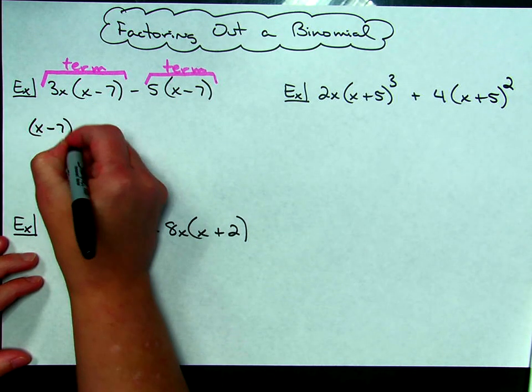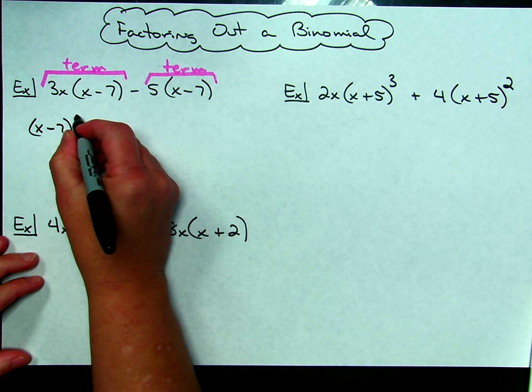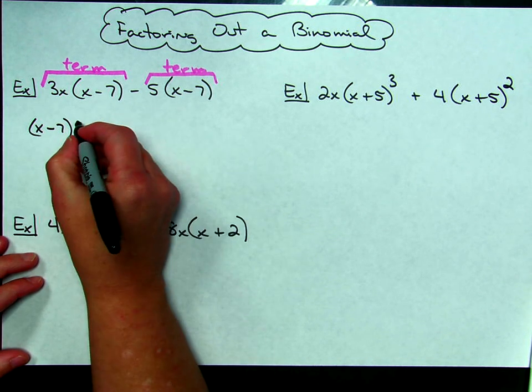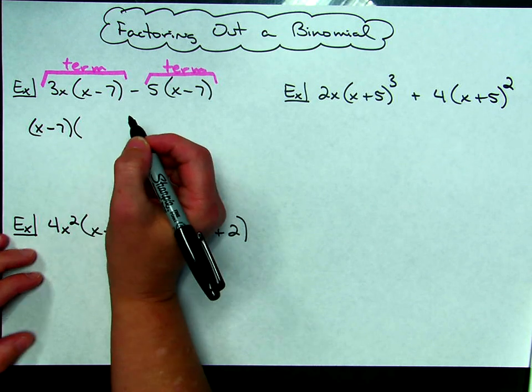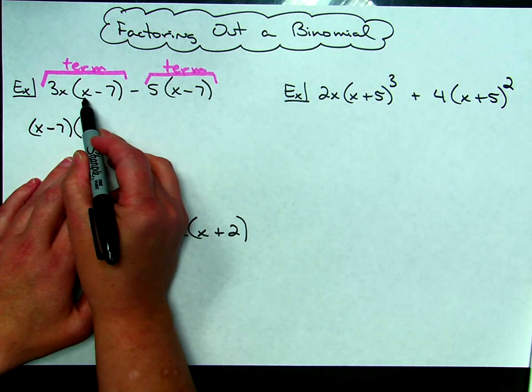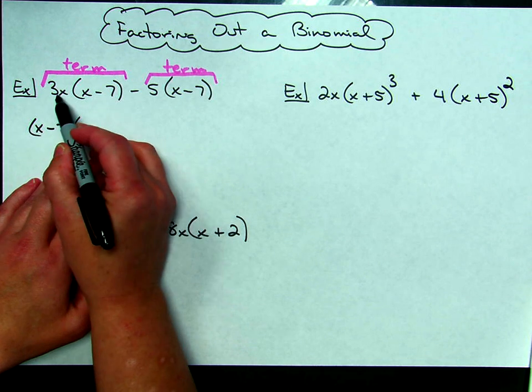And then I need to ask myself, what's left? Now, depending on how complicated this is, you might want to go to square brackets, I'm just going to go ahead and use curvy brackets. In this first term, when I take out the x minus 7, I am left with a 3x.